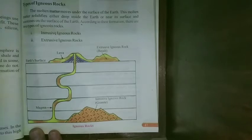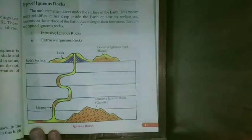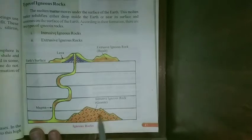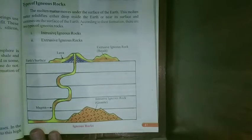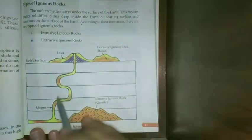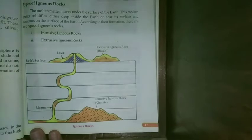When rocks or minerals go into the center of the earth, they melt, and that molten form is called magma. When magma comes to the surface of the earth, it is called lava. So when it is inside the earth, we call it magma; when it comes out to the surface, we call it lava.